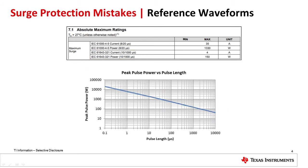Data sheets often include a graph that translates peak power versus pulse length. To avoid misinterpreting the TVS specifications, make sure that the reference waveform in the datasheet is the same as your system test waveform.